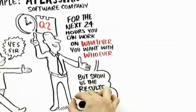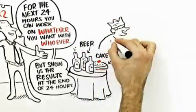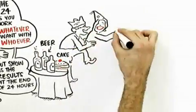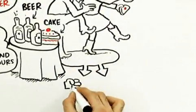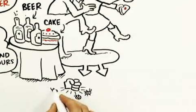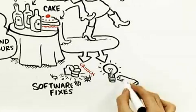All we ask is that you show the results to the company at the end of those 24 hours in this fun kind of meeting with beer and cake and fun and other things like that. It turns out that that one day of pure undiluted autonomy has led to a whole array of fixes for existing software, a whole array of ideas for new products that otherwise had never emerged.